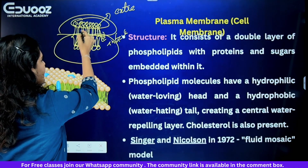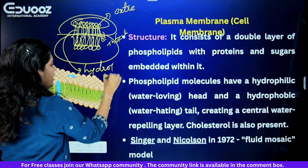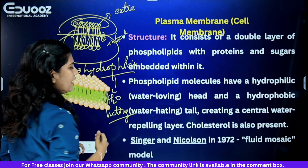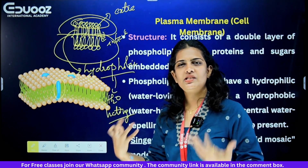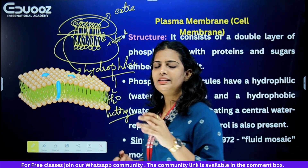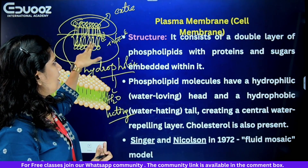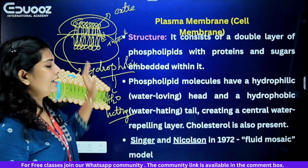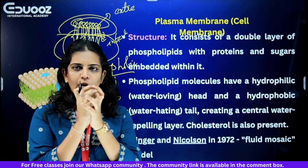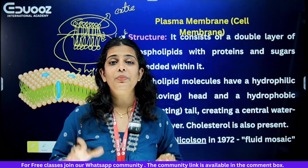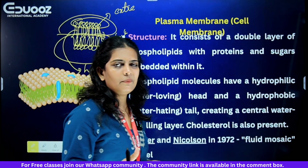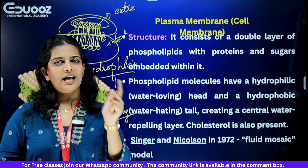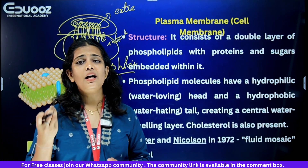The tail is hydrophobic — hydrophobic means water-hating, or water-repelling. So the phospholipid bilayer has a water-loving hydrophilic head and a water-hating hydrophobic tail.